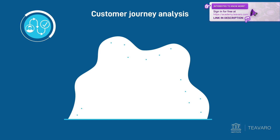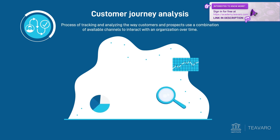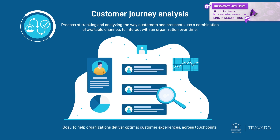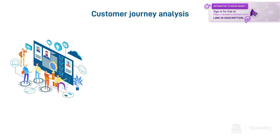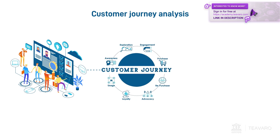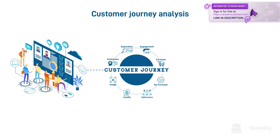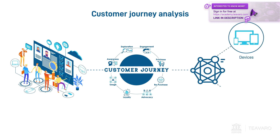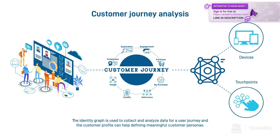Customer journey analytics, or CGA, is the process of tracking and analysing the way customers and prospects use a combination of available channels to interact with an organisation over time. Its goal is to help organisations deliver optimal customer experiences across touchpoints. An identity graph is a key enabler for qualitative customer journey analytics, as it's the only way to collect meaningful data across devices and touchpoints. The identity graph is used to collect and analyse data for a user journey, and the customer profile can help define meaningful customer personas.